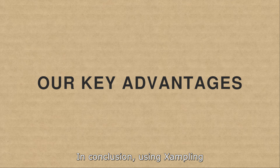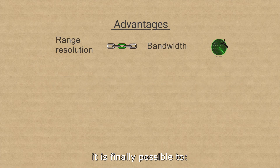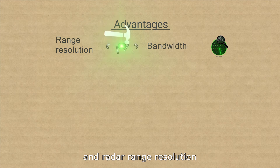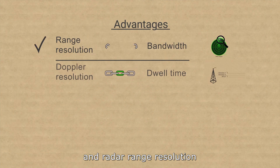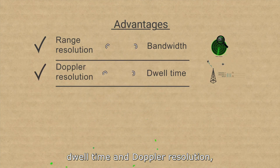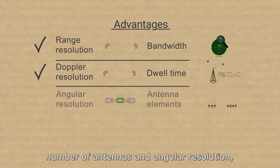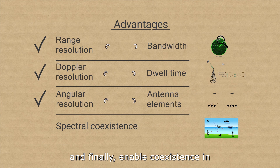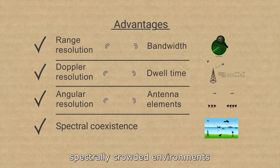In conclusion, using xampling, it is finally possible to break the link between the signal bandwidth and radar range resolution, dwell time and Doppler resolution, number of antennas and angular resolution, and finally, enable coexistence in spectrally crowded environments. Thank you.